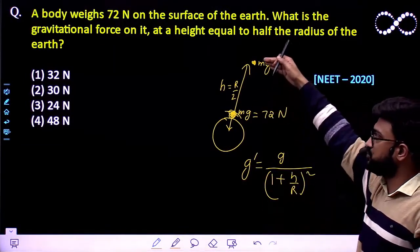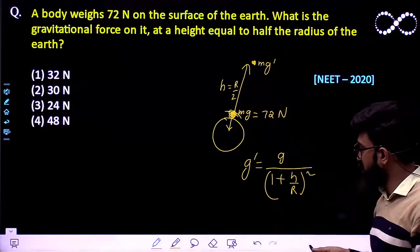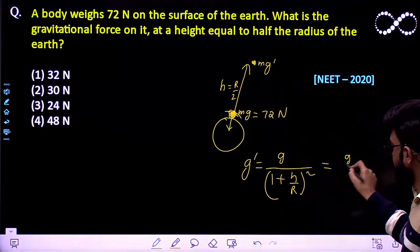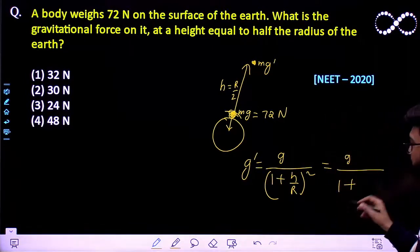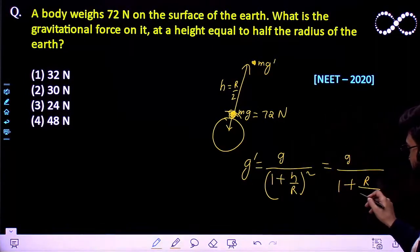So what would be the acceleration due to gravity at certain height? This must be equal to g, 1 plus, what is height? Height is nothing but r by 2.